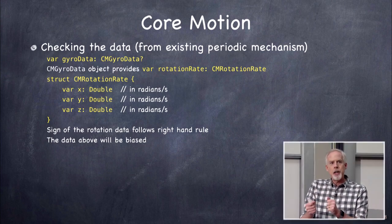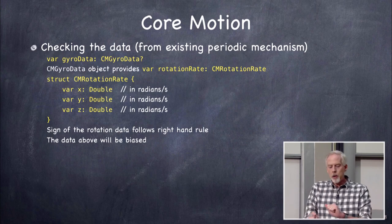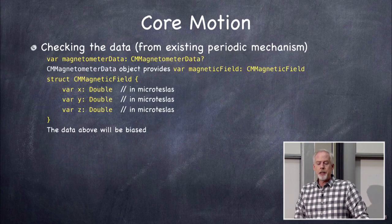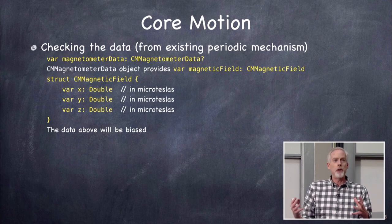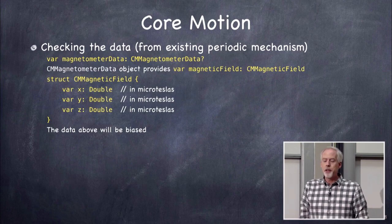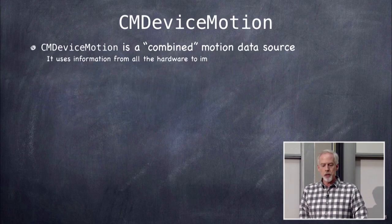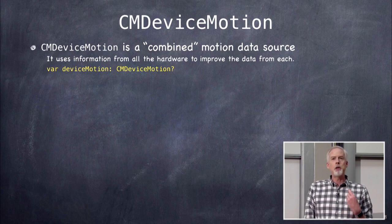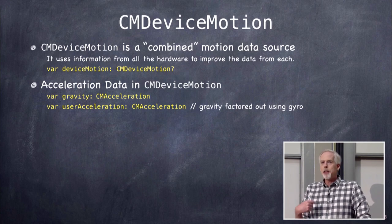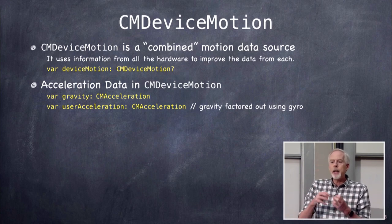The gyro tells you the rotation rate around those three axes in radians per second. However, the gyro alone can get bias introduced — it can drift. It works much better in concert with the accelerometer. Similarly, the magnetometer can find the magnetic field around you, but you'd like to know how much is Earth's field versus local interference. So we don't usually access the gyro or magnetometer directly.